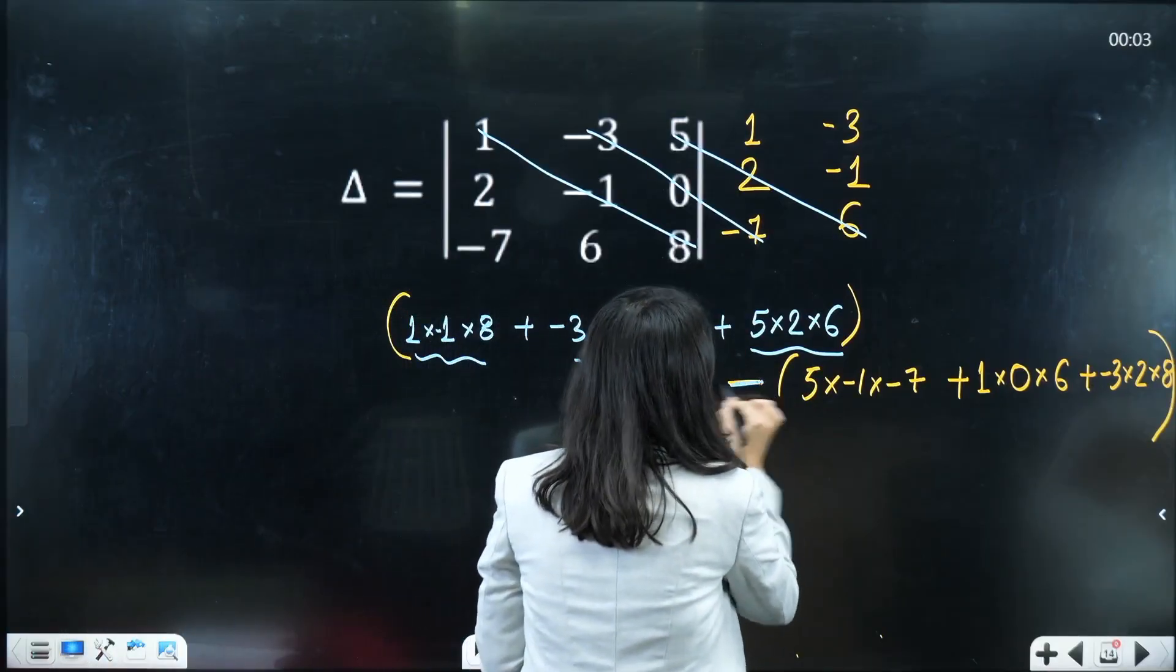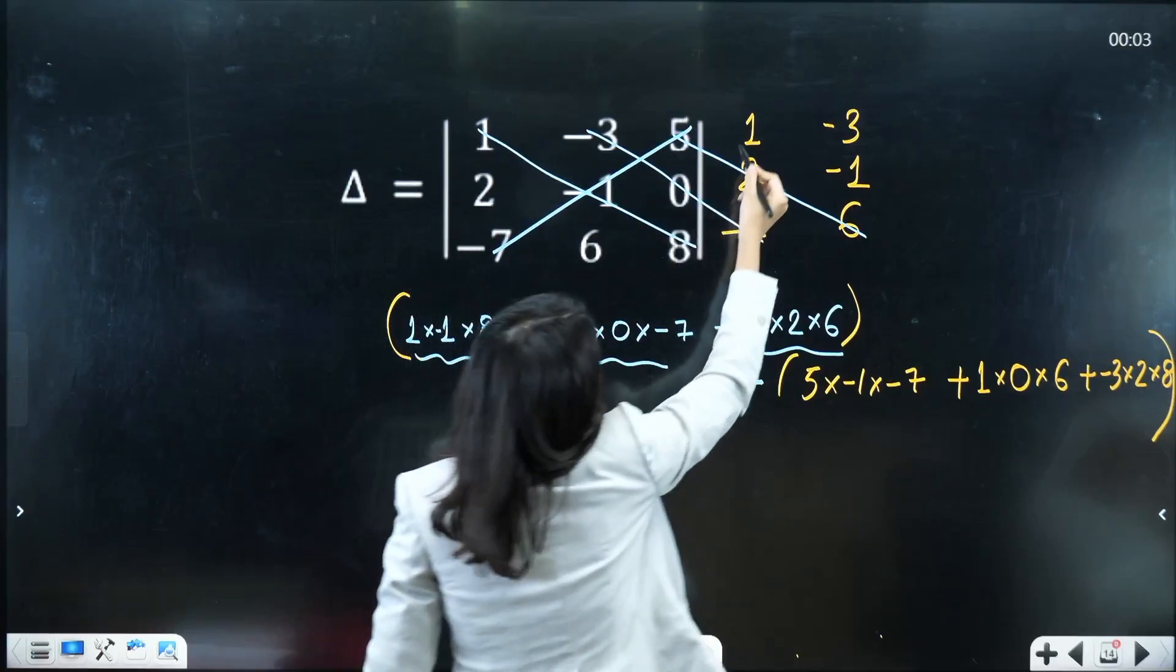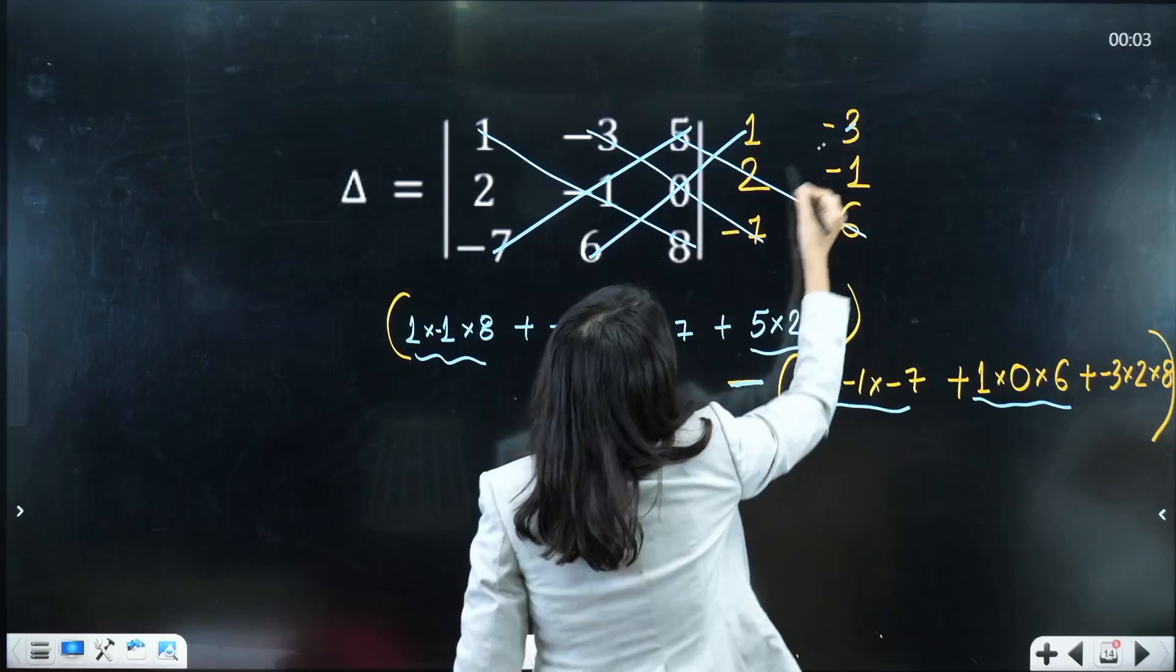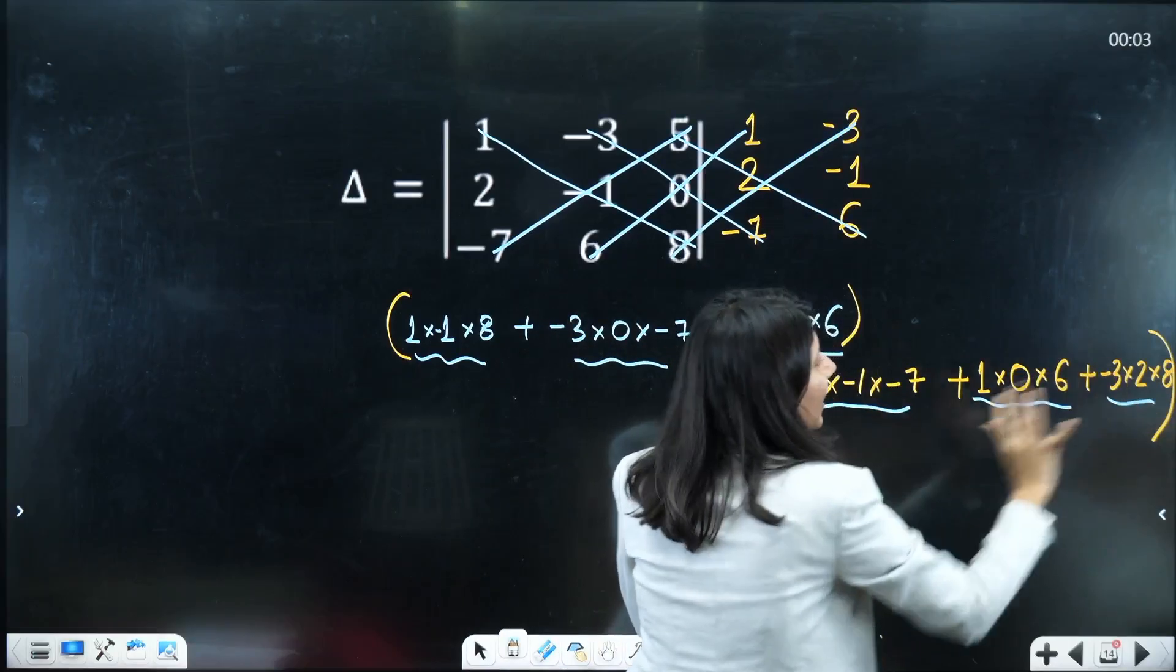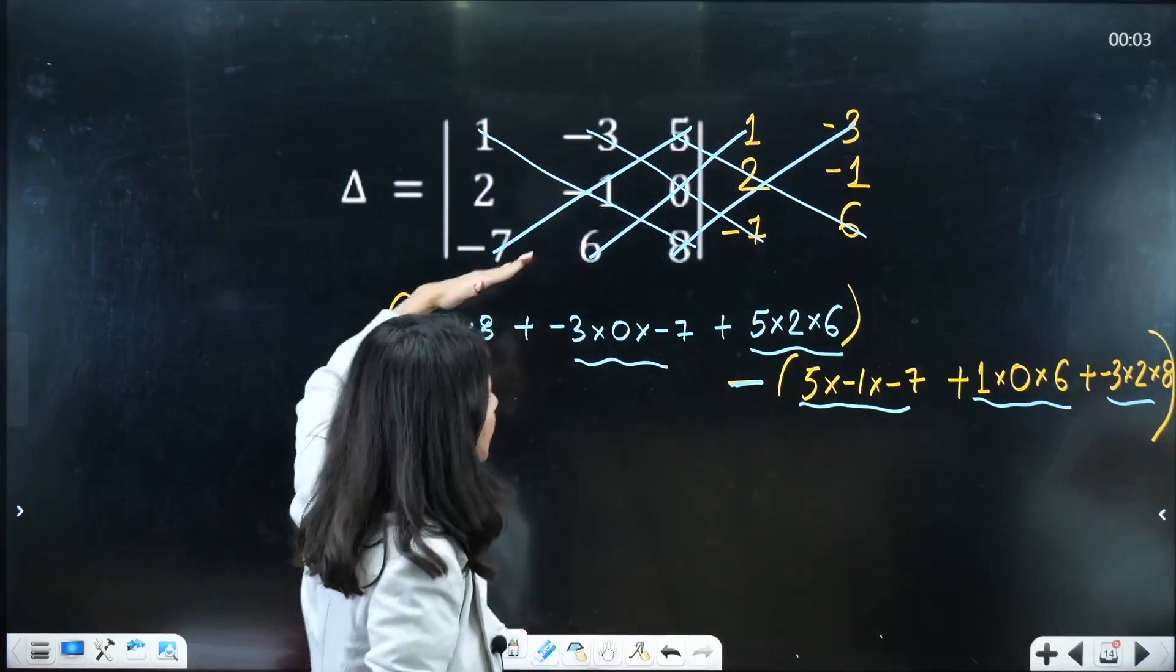Then minus sign is there and start with this. So 5 minus 1 and minus 7, 1, 0 and 6, and minus 3, 2 and 8. Again, you have to add everything. So this thing is plus and this thing is minus.